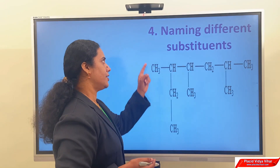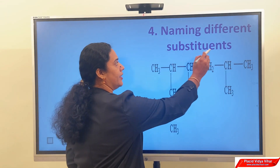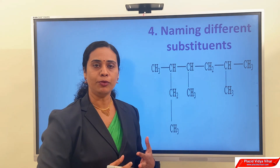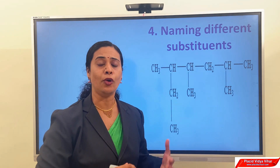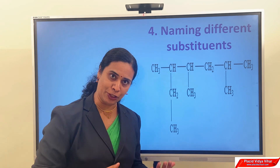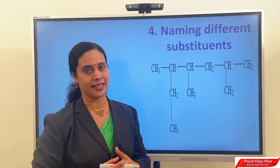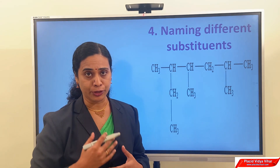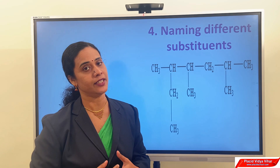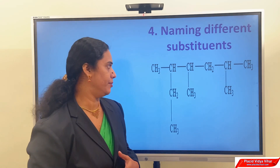Next, rule number 4: naming different substituents. If an organic compound contains 2 or more different substituents or side chains, then we have to consider the alphabetic order.